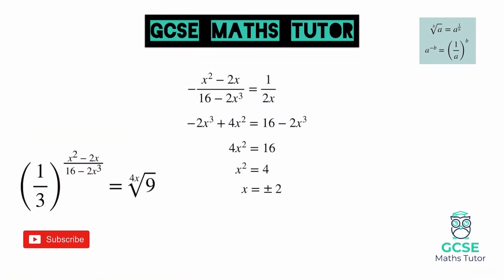We need to think back to that original question and actually that original question there had a fractional power. Now we know when it comes to fractions that denominator cannot be negative so looking at 16 take away 2x cubed we know that that cannot equal zero because that would give us an undefined result with our fraction.